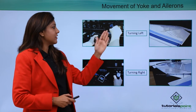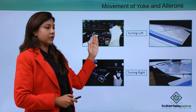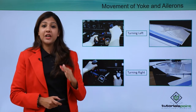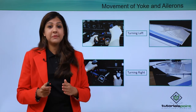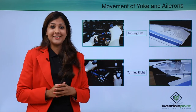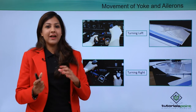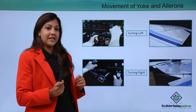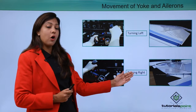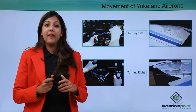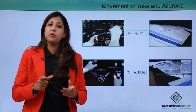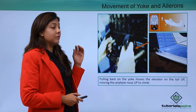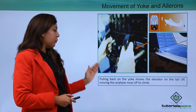Looking at yoke movement: if you want to turn left, you take the aircraft towards the left and the ailerons on the wing part of the aircraft move down, helping the aircraft turn to the left. If you want to turn right, you turn the yoke to the right, which makes the ailerons on the wing area go up, helping the aircraft move towards the right.